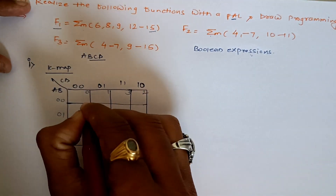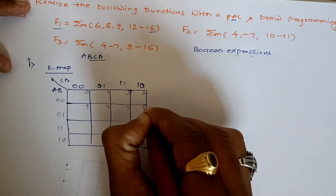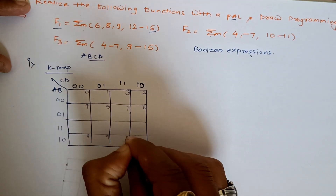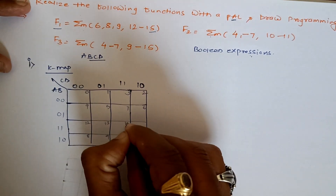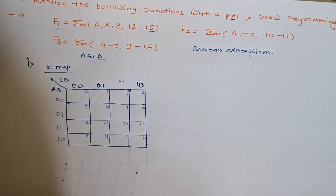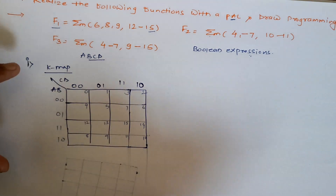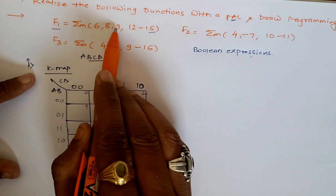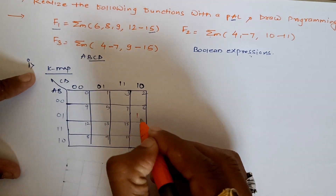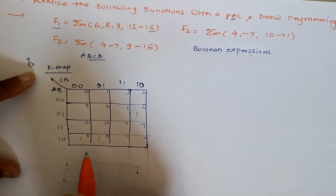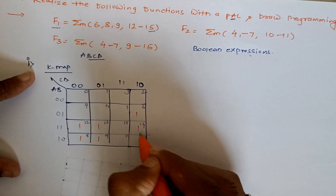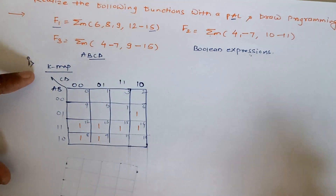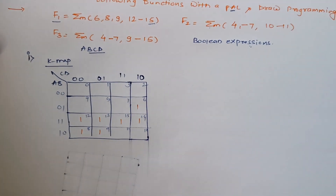The cell numbers are: 0, 1, 3, 2, then 4, 5, 7, 6, then 8, 9, 11, 10, then 12, 13, 15 and 14. Now let's mark the minterms which are present in F1. The minterms are 6, 8, 9, and then 12 to 15, that means 12, 13, 14 and 15. So all these terms are marked as 1.